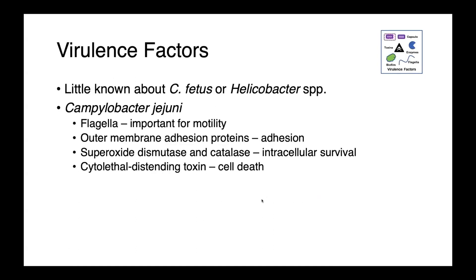When it comes to virulence, not a lot is known about Campylobacter fetus or our Helicobacter species. For Campylobacter jejuni, because it's a really important human pathogen, more studies have been done. We know that they're motile, they have flagella, they have outer membrane proteins involved in adhesion, they produce superoxide dismutase and catalase — enzymes which help them deal with reactive oxygen species — and toxins which lead to cell death.